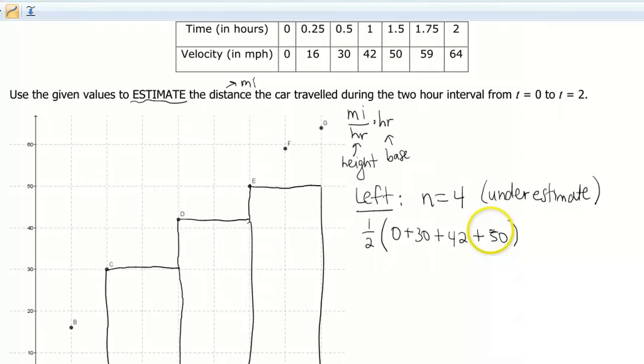Okay, then the height of my fourth rectangle is at 50. So again, we're not using all the data points that I gave you, but we're using a few of them. And we're using the ones that are really gonna give us the best estimate here. Okay, so that gives us a grand total of 61. And this would be in miles, as we talked about earlier.